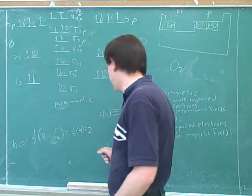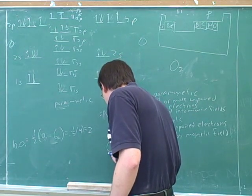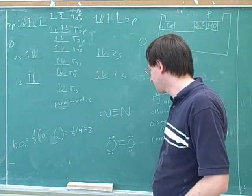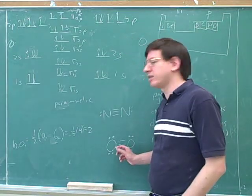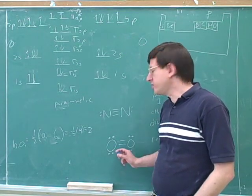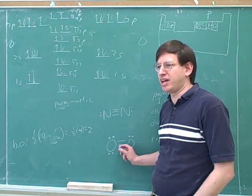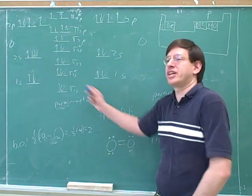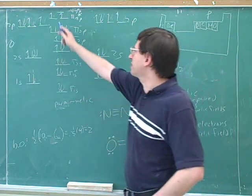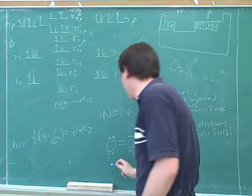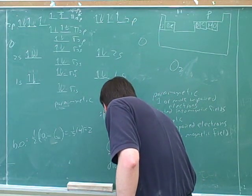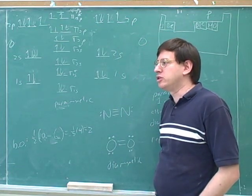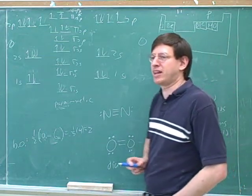Now let's see what the Lewis structure would say. This is what we would draw as the Lewis structure for oxygen. So what does the Lewis model predict — paramagnetic or diamagnetic? Diamagnetic. We have a contradiction then between the two models. This molecular model is predicting unpaired electrons, but if you actually drew the Lewis structure for oxygen by counting the valence electrons, you would not find any unpaired electrons. So we should do an experiment and see if oxygen is attracted or repelled by a magnetic field.